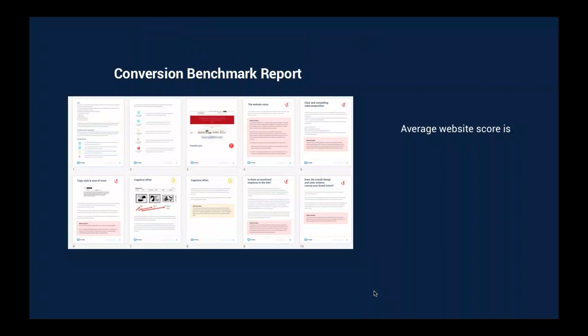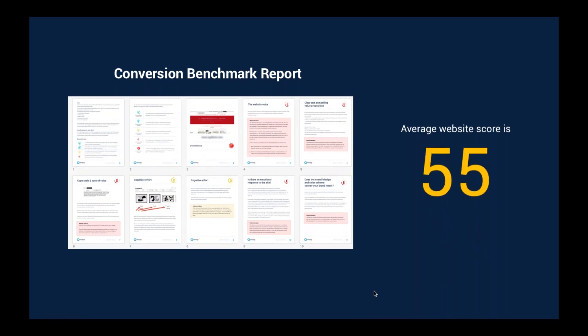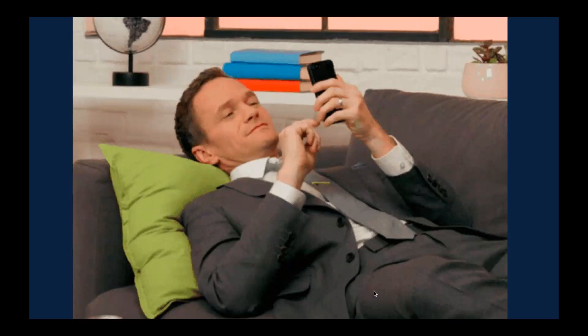We do conversion benchmark reports where we benchmark websites on 20 different criteria, evaluating how well they are designed for conversion. What do you think the average website scores on that report out of 100? You would think in 2018 going into 2019 it would be high. The average website score is 55. That is just absolutely horrible.